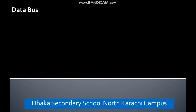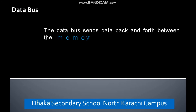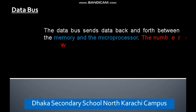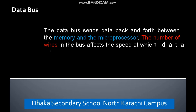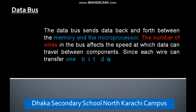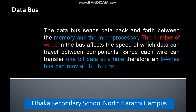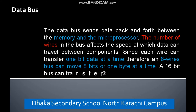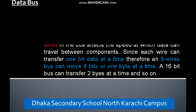Data Bus. The data bus sends data back and forth between the memory and the microprocessor. The number of wires in the bus affects the speed at which data can be passed. Since each wire can transfer one bit of data at a time, an eight-wire bus can move eight bits, or one byte, at a time. A 16-bit bus can transfer two bytes at a time, and so on.